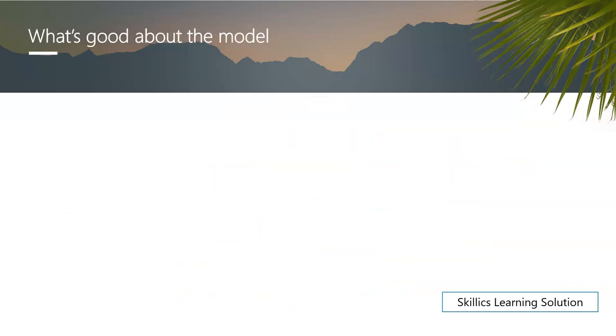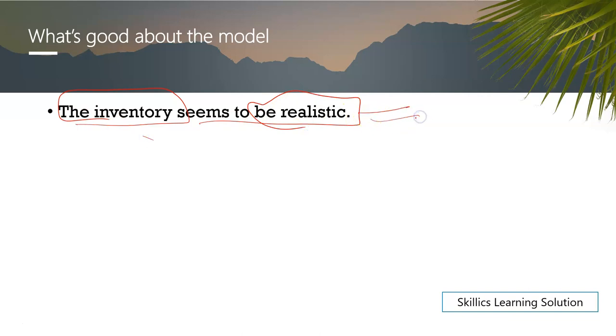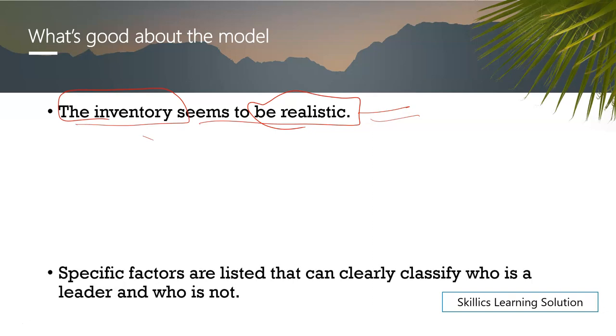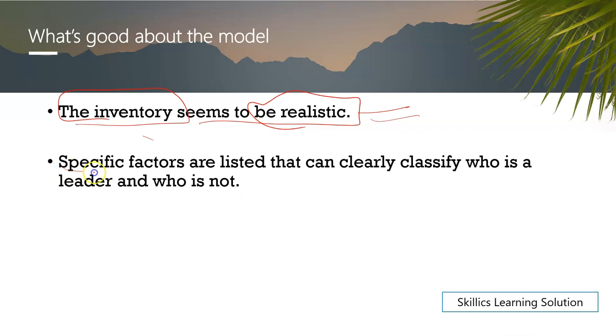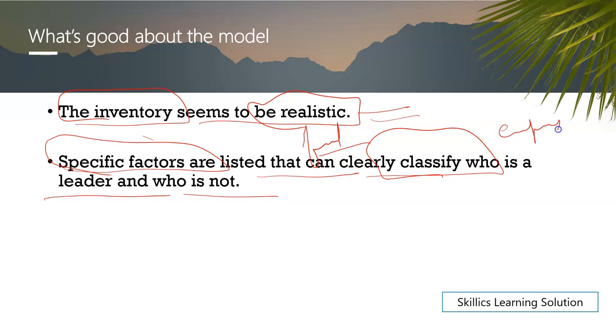So these were the five traits that were identified that good leadership qualities and effective leadership require, as per this inventory. Now, what are the good things about this inventory? First, the inventory and survey made were realistic. The five things are not something superficial. If these five things are within someone, then obviously he will be a good leader. The good thing was that the specific factors told - the five factors - on the basis of which you can easily classify which leader is good and which leader is not. Because you can tell if there is empowerment capacity or not, if there is courage or not. So all these things are mentioned.